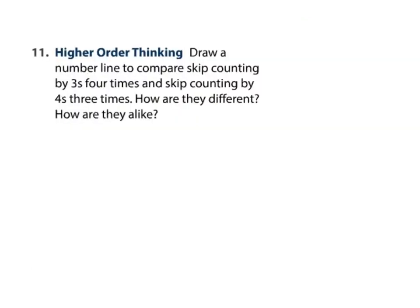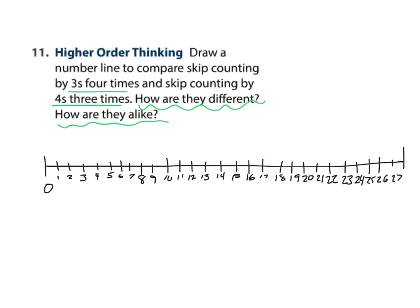Draw a number line to compare skip counting by 3s 4 times and skip counting by 4s 3 times. How are they different? How are they alike? How are they different? So I am going to draw one number line. Remember, we start at 0. So I will start by counting by 3s 4 times. Remember we're always starting at the zero so we have there's three, that's one, two jumps, three jumps, four jumps, those are my threes. Now let's count by fours three times. Again start at the zero, one, two, three.